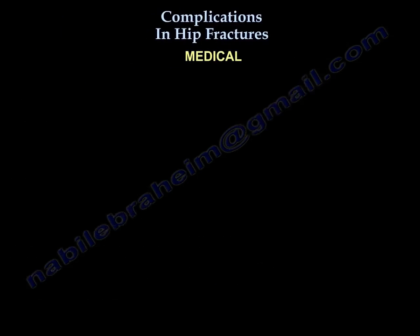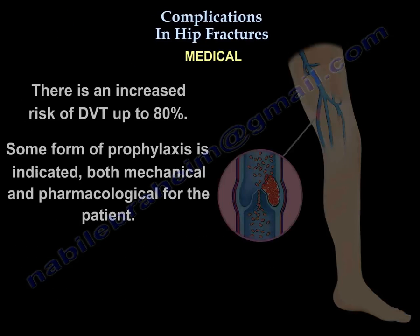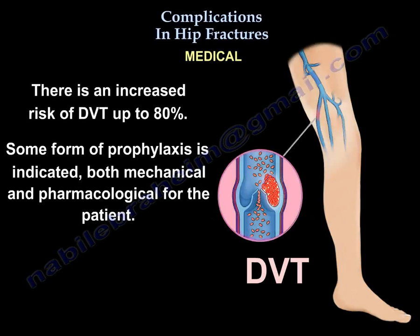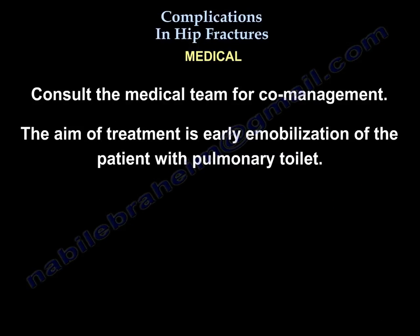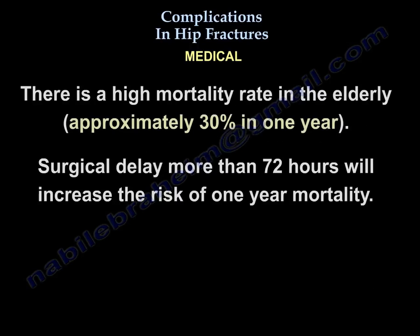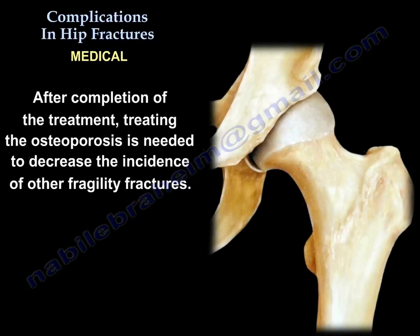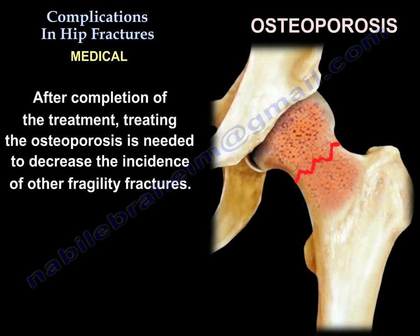Another complication is medical complications. There is an increased risk of DVT up to 80%, so some form of prophylaxis is indicated — both mechanical and pharmacological. Consult the medical team for co-management, and the aim of treatment is early mobilization with pulmonary toilet. There is a high mortality rate in the elderly, and surgical delay of more than 72 hours increases the risk of one-year mortality. You also need to treat osteoporosis to decrease the incidence of other fragility fractures.